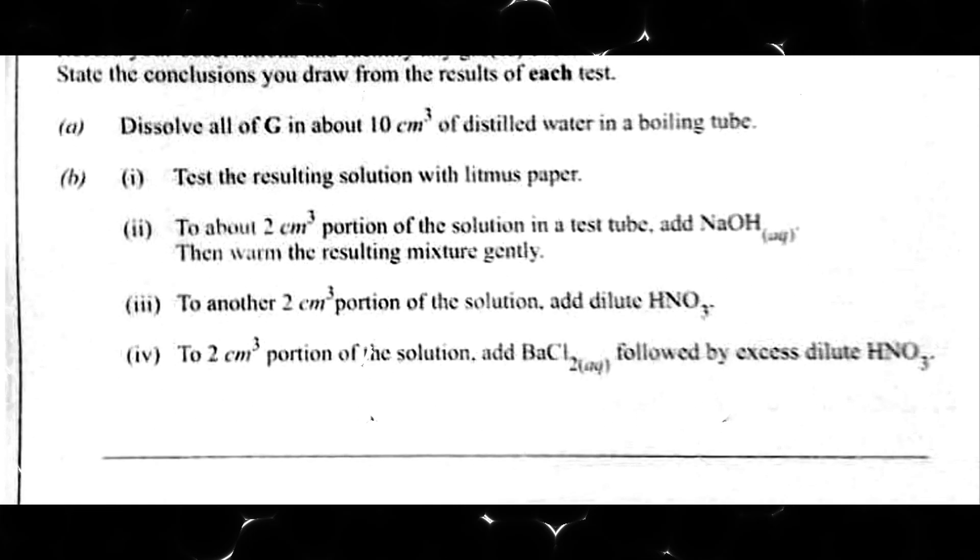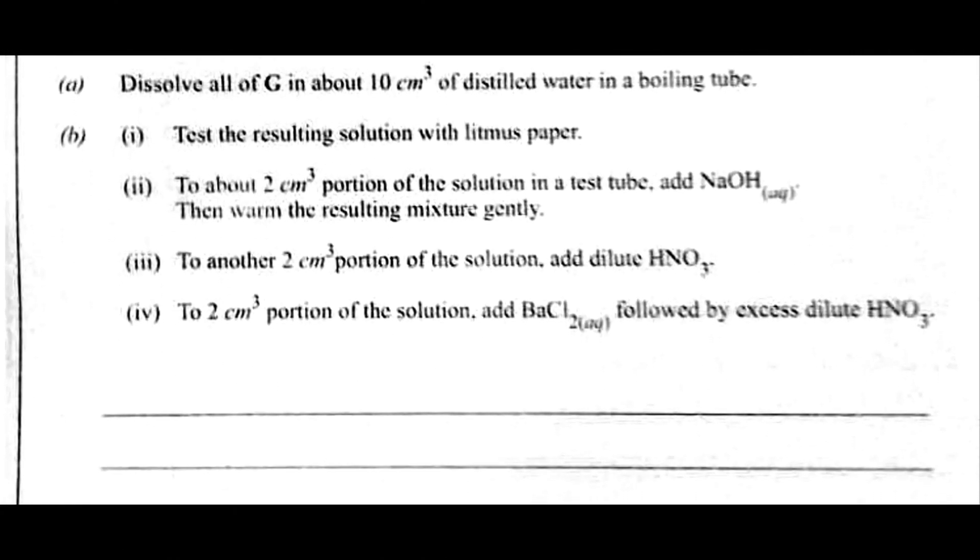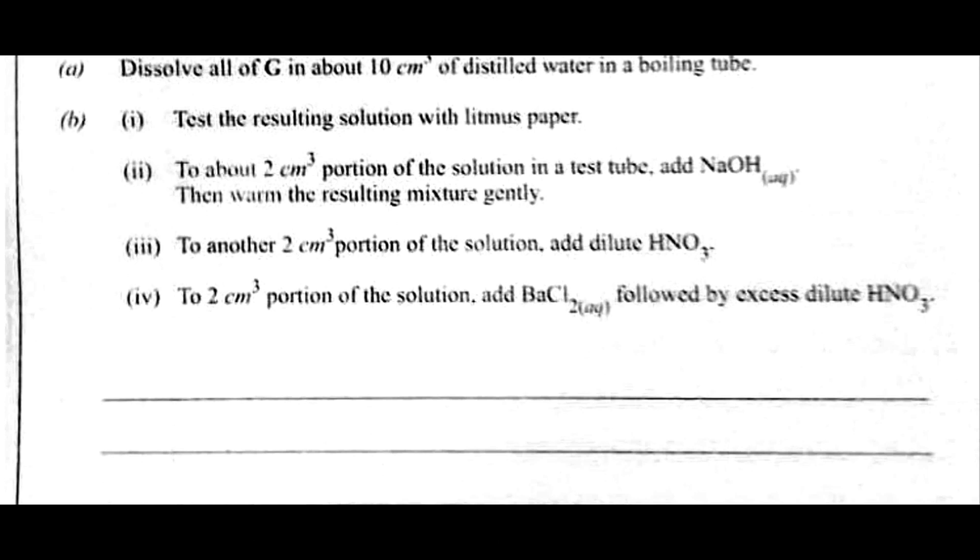So, you are told to dissolve all of G in 10 cm³ of distilled water. So, you draw your table. Test, observations and inferences. You rule your lines. A. You use the number given during the question. Dissolve all of G. For the fact that you are asked to dissolve and there is no step where you are asked to filter, it means that G is what? Soluble.